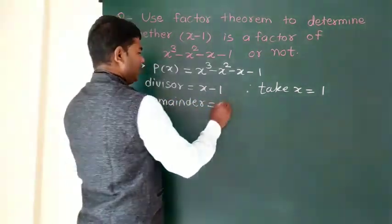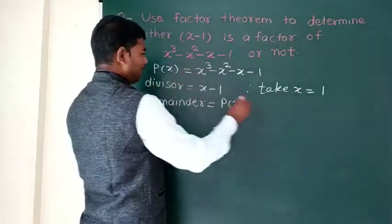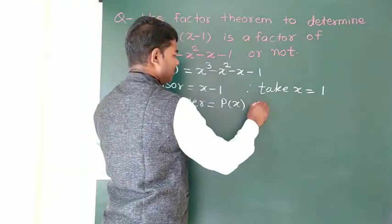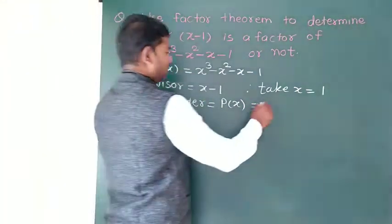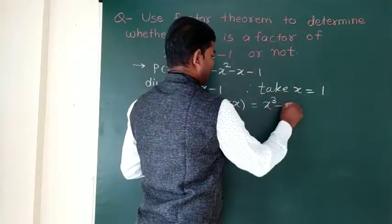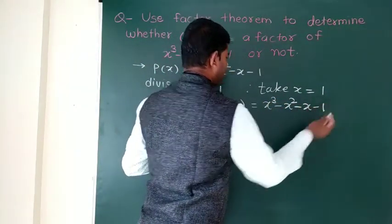The remainder of this P(x) polynomial will be x cube minus x square minus x minus 1.